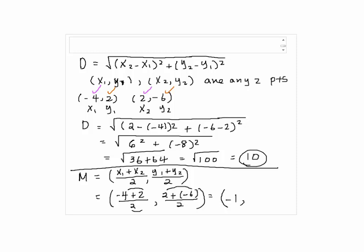give us negative 1. And 2 plus negative 6 will give us negative 4. So negative 4 over 2 will be negative 2. So this will be the midpoint.